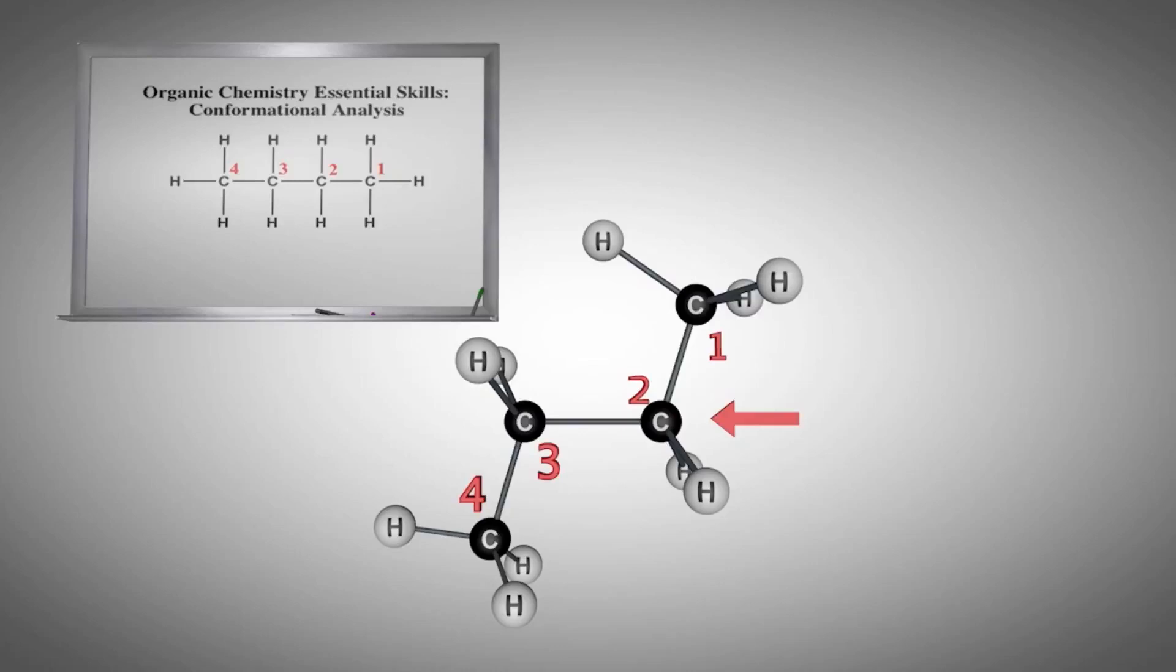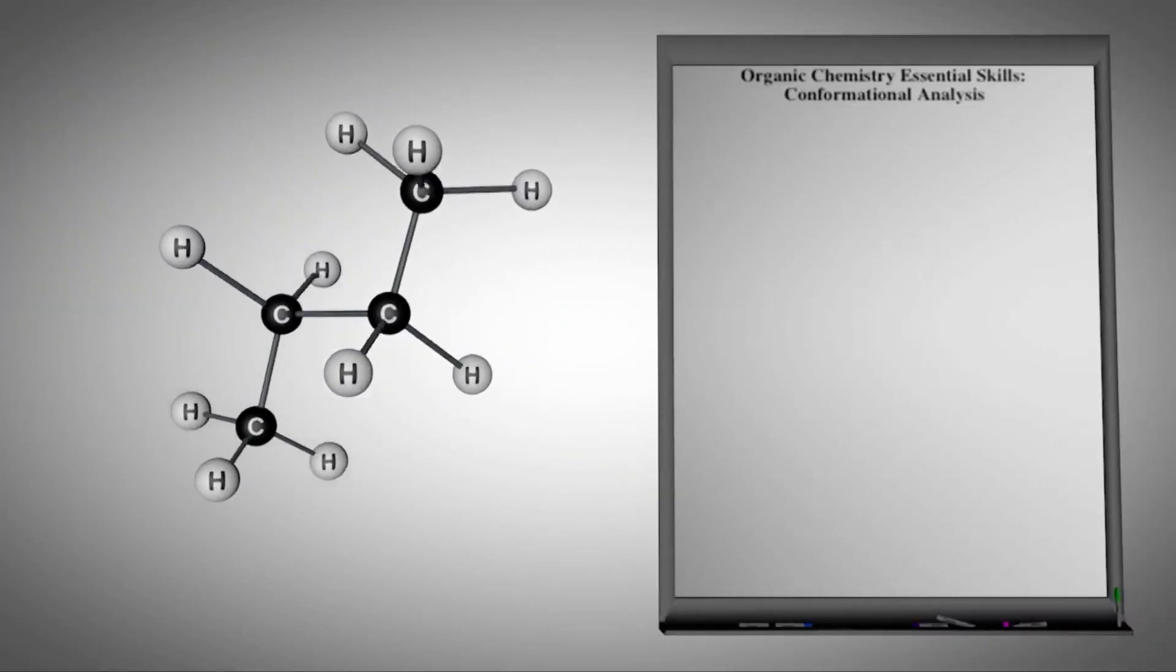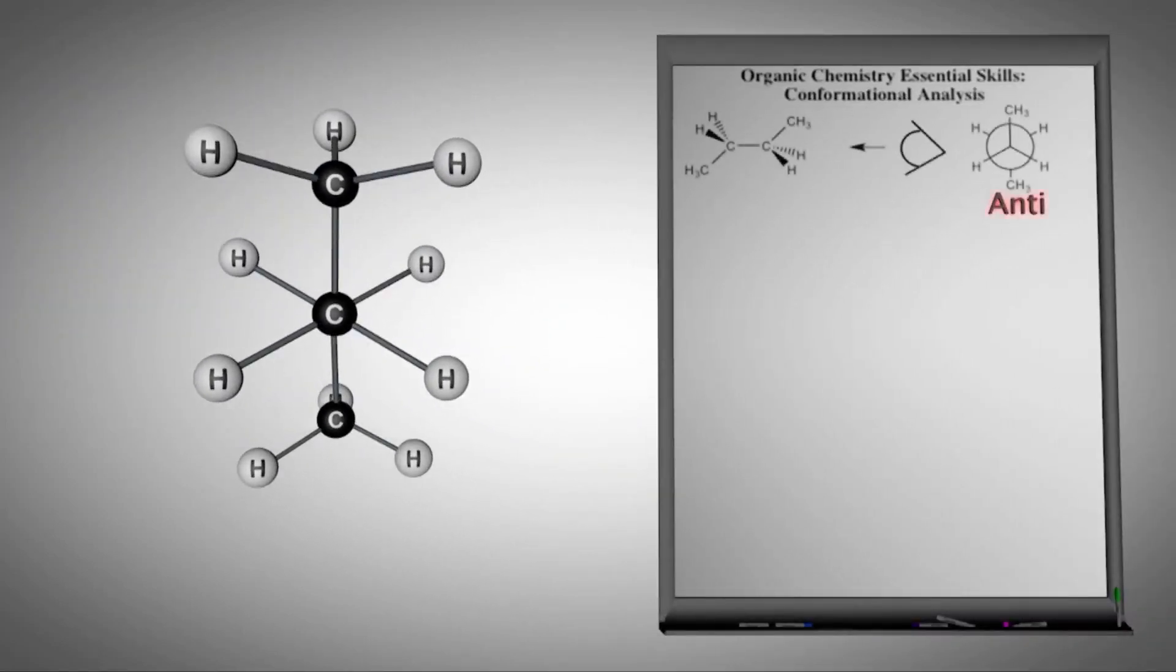However, in this example, we will focus solely on looking down the sigma bond between carbon-2 and carbon-3, which will give rise to the following four Newman projections. The lowest-energy staggered rotamer is called the anti-conformation, where all groups are as far apart from each other as possible.